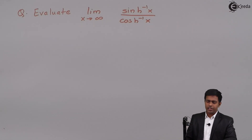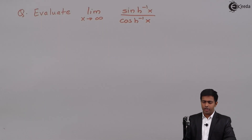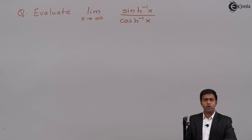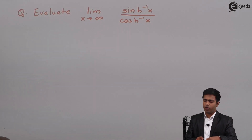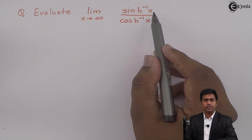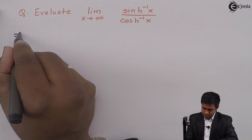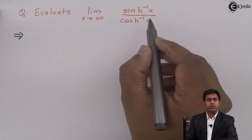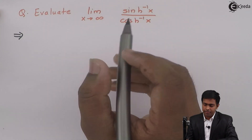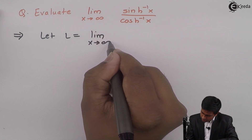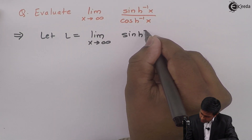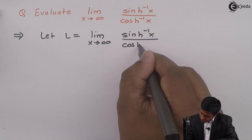Hello everyone. Here in this problem we have to evaluate the limit as x tends to infinity of hyperbolic sine inverse of x upon hyperbolic cosine inverse of x. We will say this limit as L, so let L equal to limit x tends to infinity of hyperbolic sine inverse of x upon hyperbolic cosine inverse of x.